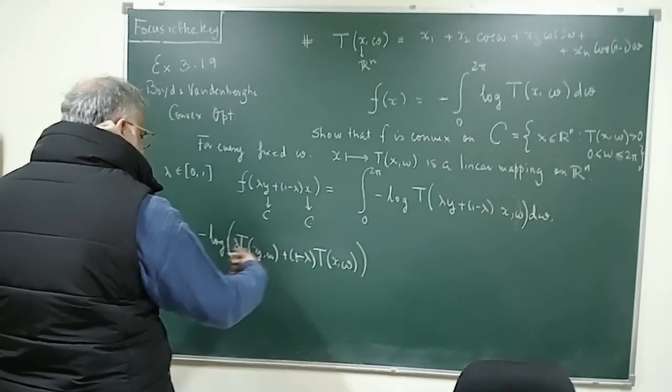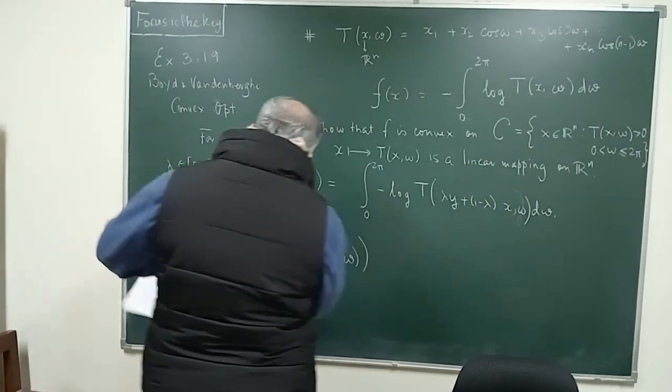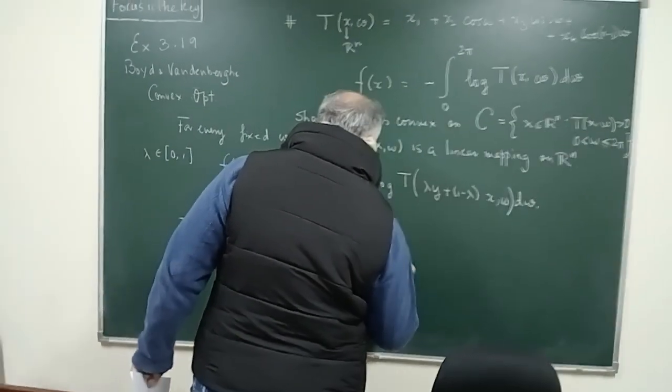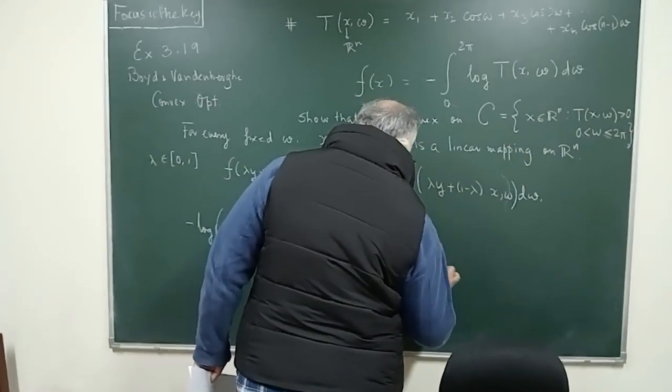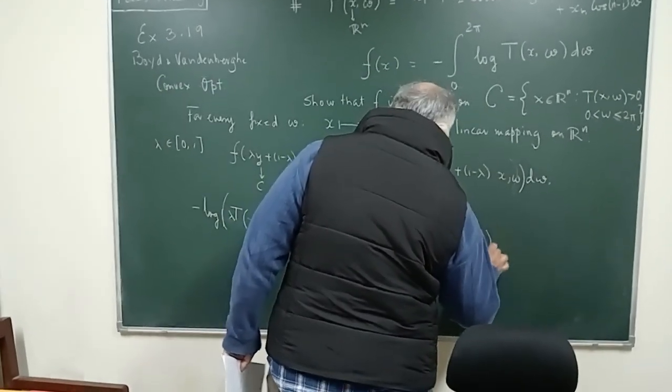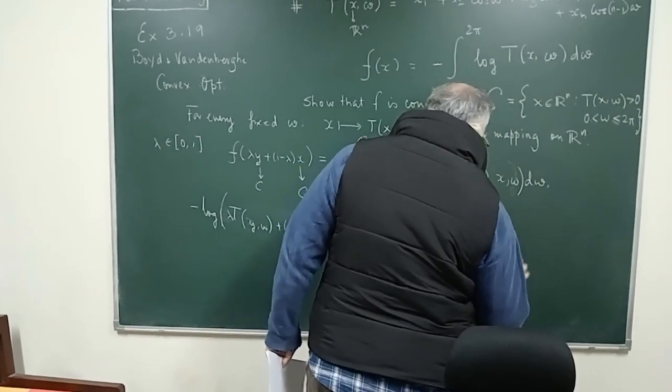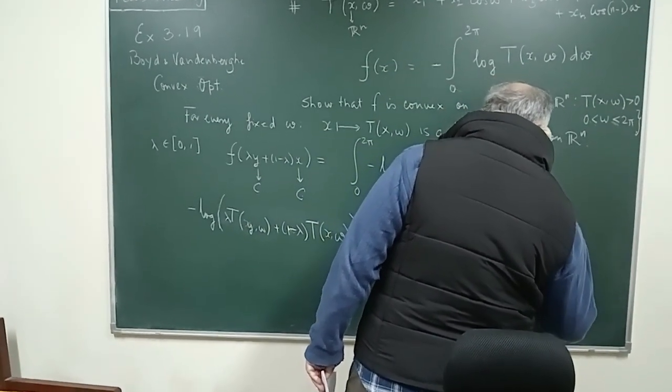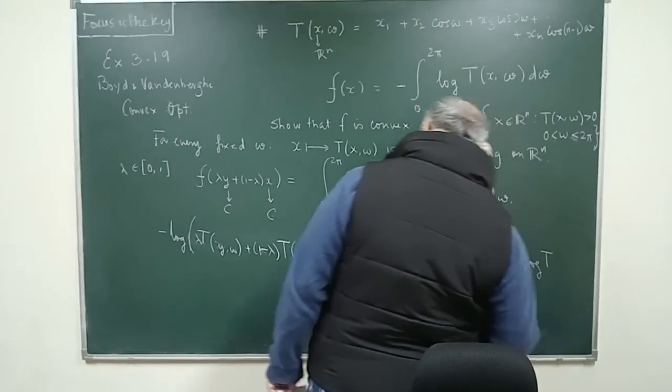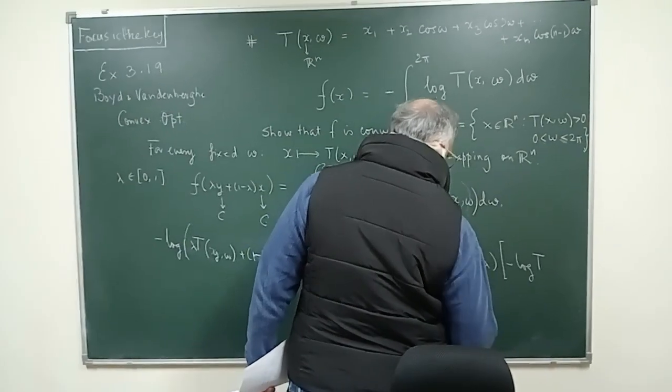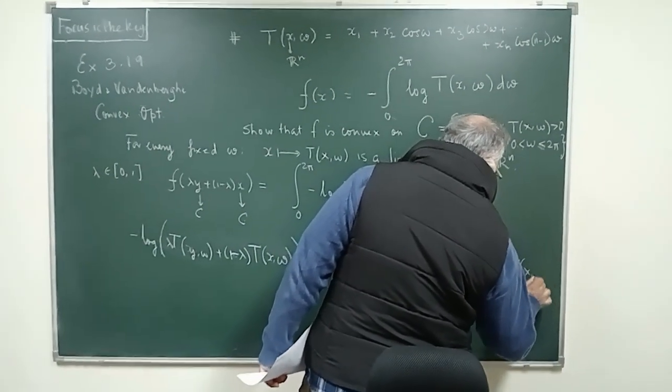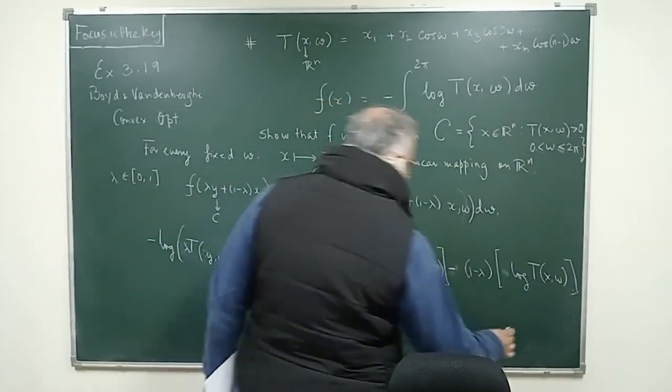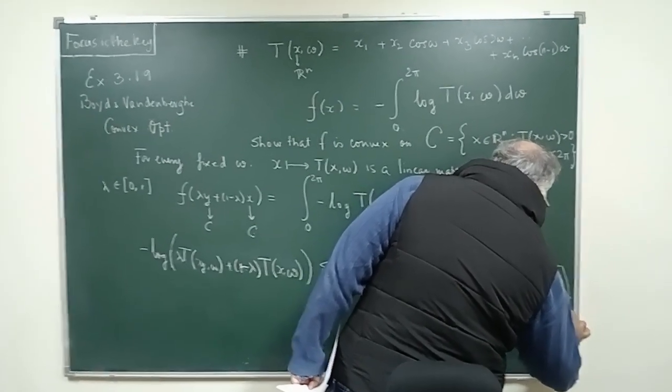This is what will happen for every fixed ω. And now by the convexity of -log, because log is concave, -log is convex, I will have -λ log(T(y,ω)) + (1-λ)(-log(T(x,ω))). This is true for any ω, this is true for all ω between 0 and 2π.